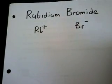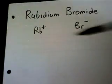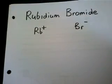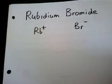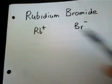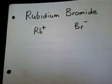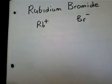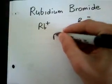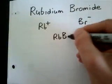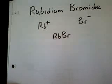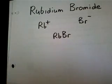And then adjusting the subscripts on this particular example is pretty unnecessary because you have just a one-to-one ratio of charge. So if we just put them together one-to-one, then the charges will cancel. So our final formula is going to be RbBr. That is the correct formula for rubidium bromide.